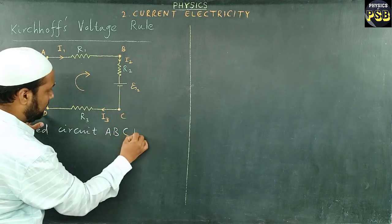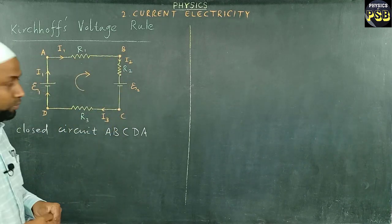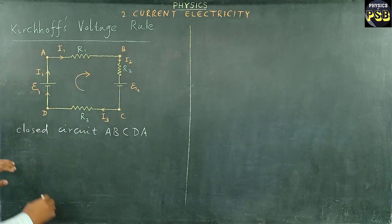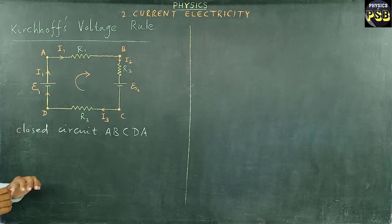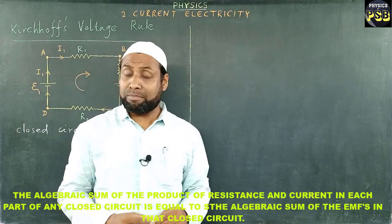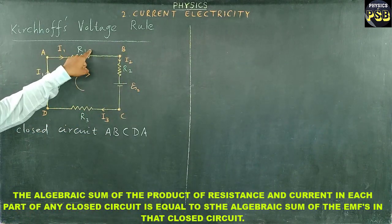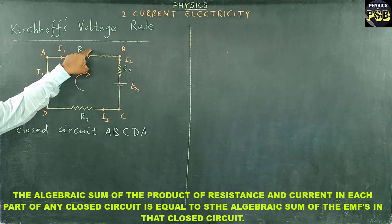Here the loop is closed circuit. Closed circuit or loop is nothing but ABCDA. This forms closed loop to apply Kirchhoff's voltage rule. Kirchhoff's voltage rule says that sum of product of current and resistance in a closed circuit is equal to the sum of EMFs in that closed circuit.